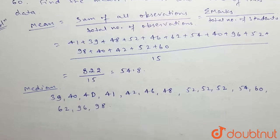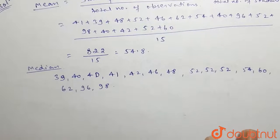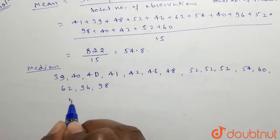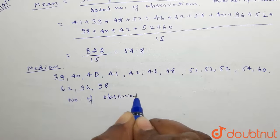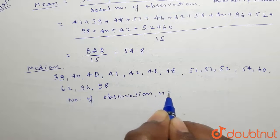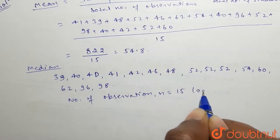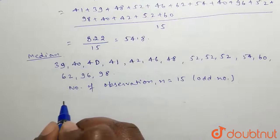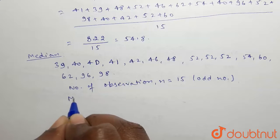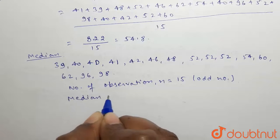Now, the number of observations n is equal to 15, which is an odd number. If the number of observations is odd, then median is given as (n+1)/2 th observation.